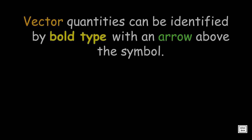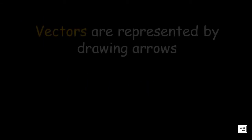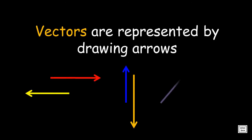Vector quantities can be identified by bold type with an arrow above the symbol. Also, vectors are represented by drawing arrows, which can be horizontal, vertical, oblique, or towards any position, which shows its direction.